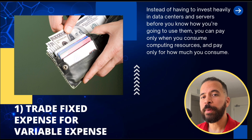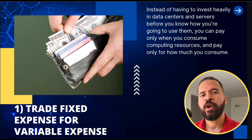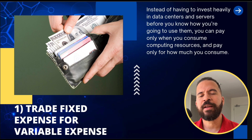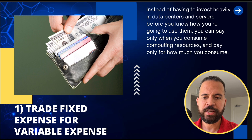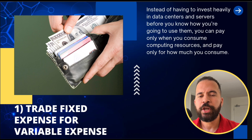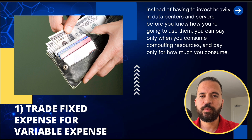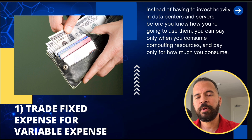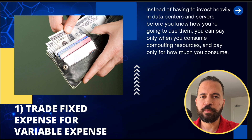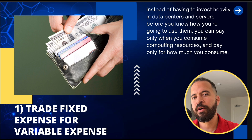Number one is trade fixed expenses for variable expenses. What does that even mean? In an on-premises world, what you used to have to do was invest a lot of money in upfront capital. I used to be a sysadmin way back in the day, and every time we needed a new piece of infrastructure, you just couldn't go into a store and buy that off the shelf. These are high-end servers with a lot of specialized equipment. Some of it is very proprietary, a lot of it gets backordered, and a lot of it has to be made just in time. There's no inventory just sitting around.